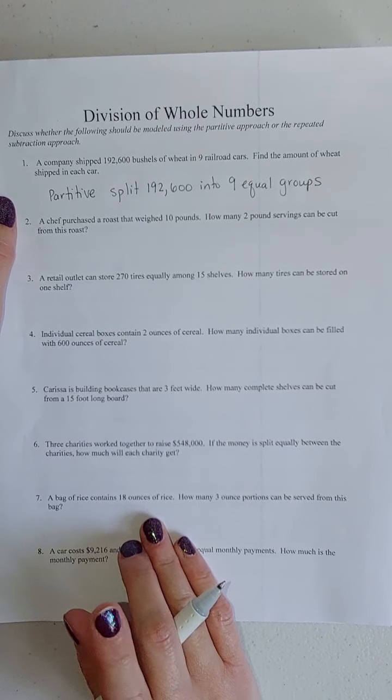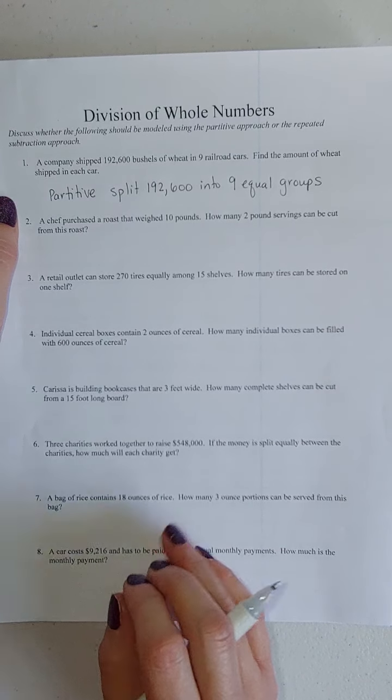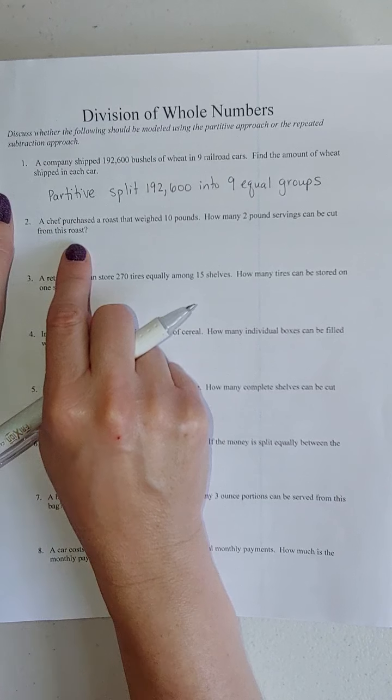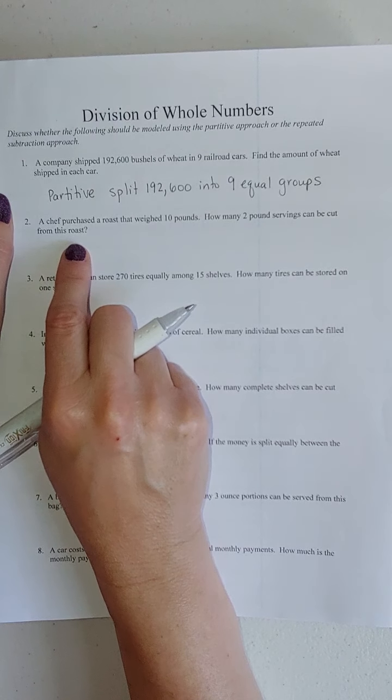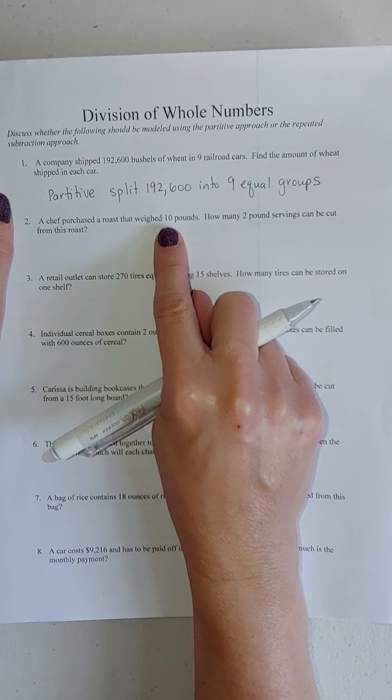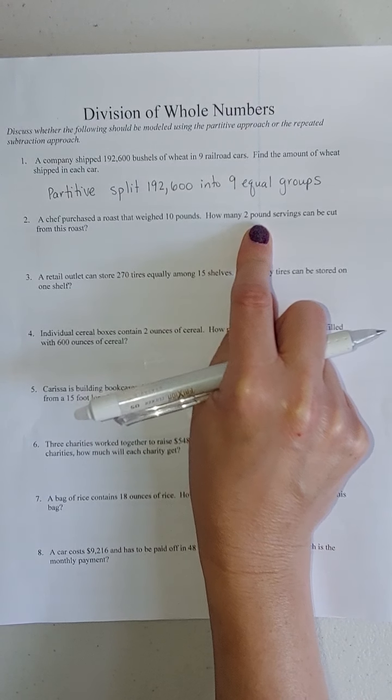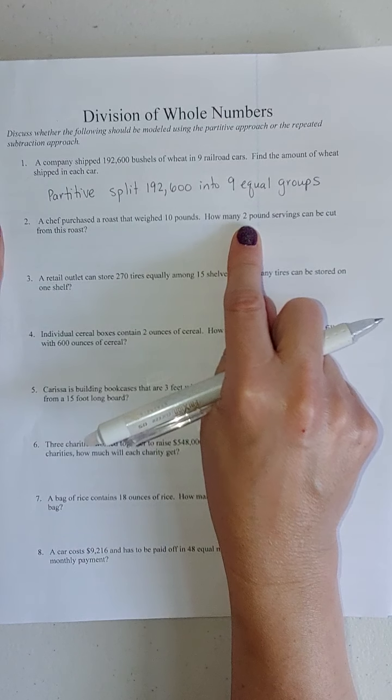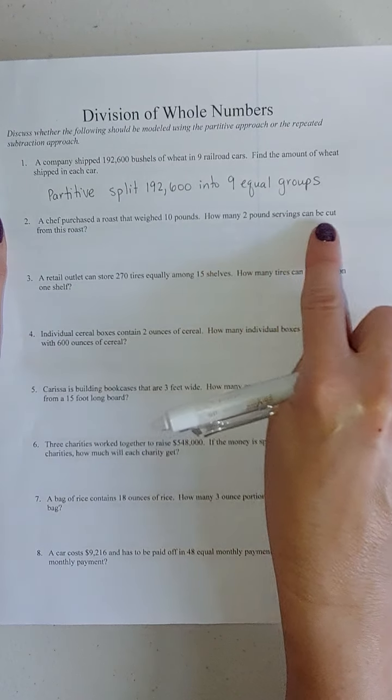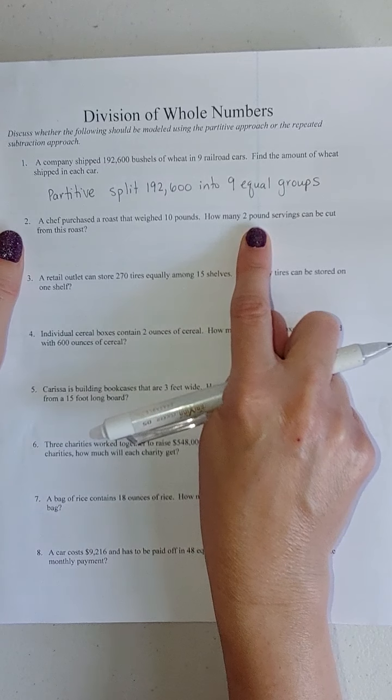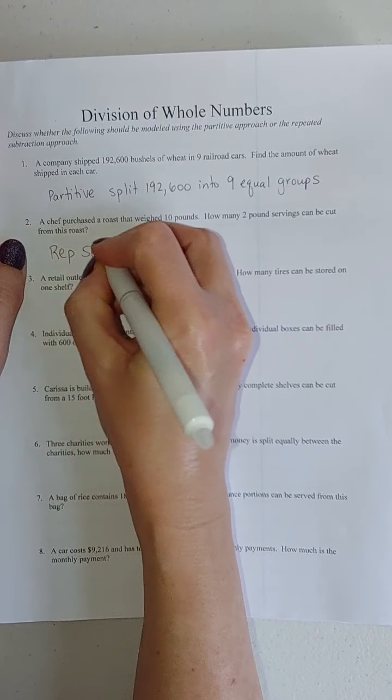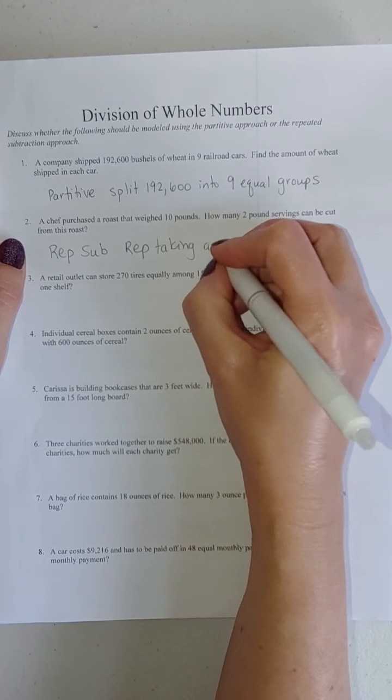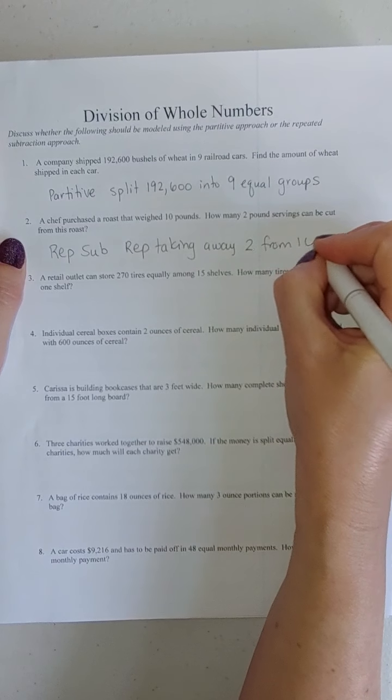The next one. A chef purchases a roast that weighs 10 pounds. How many two-pound servings can be cut from this roast? Is that partitive or is that repeated subtraction? Am I splitting this into two equal groups? Or am I repeatedly taking away two? For this one, I'm repeatedly taking away two. I'm cutting away two pounds. So this is going to be a repeated subtraction.